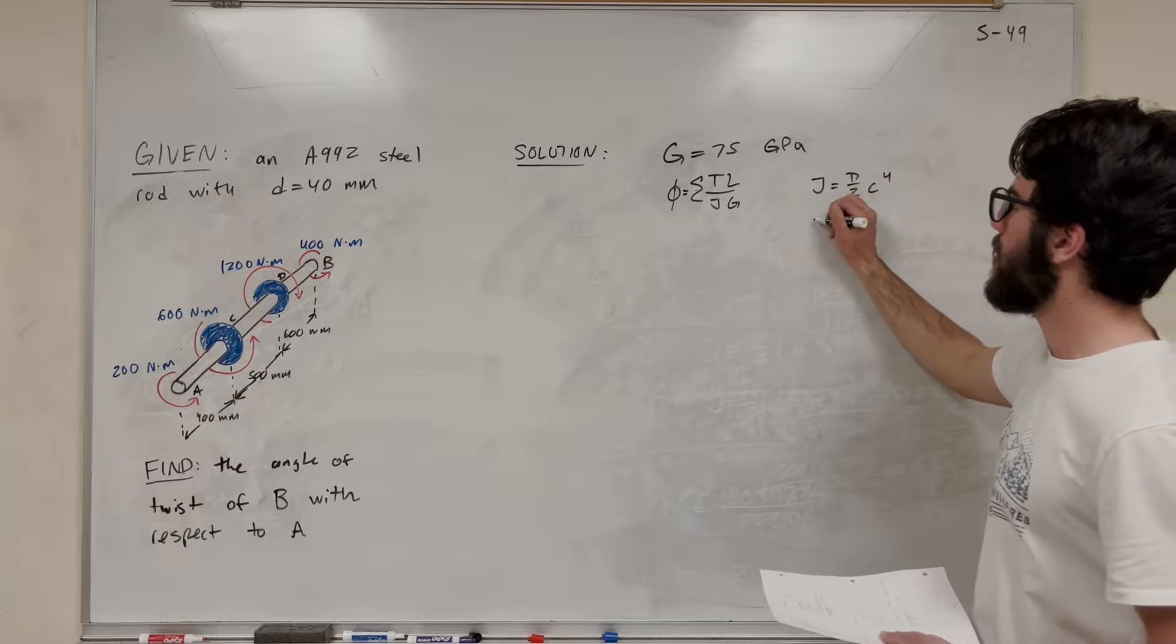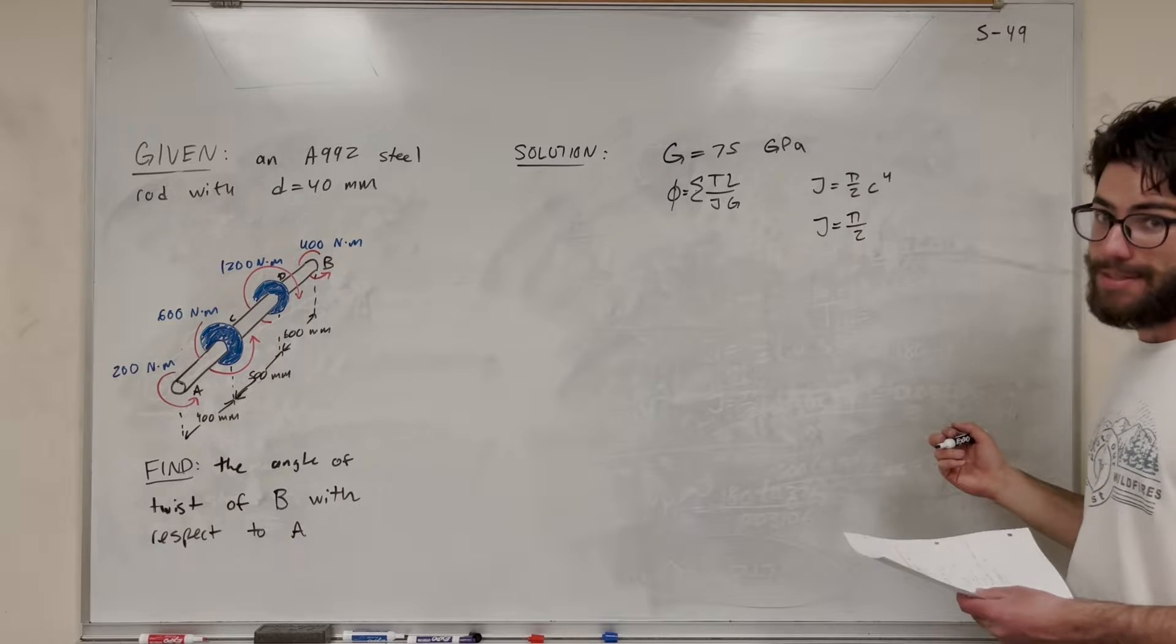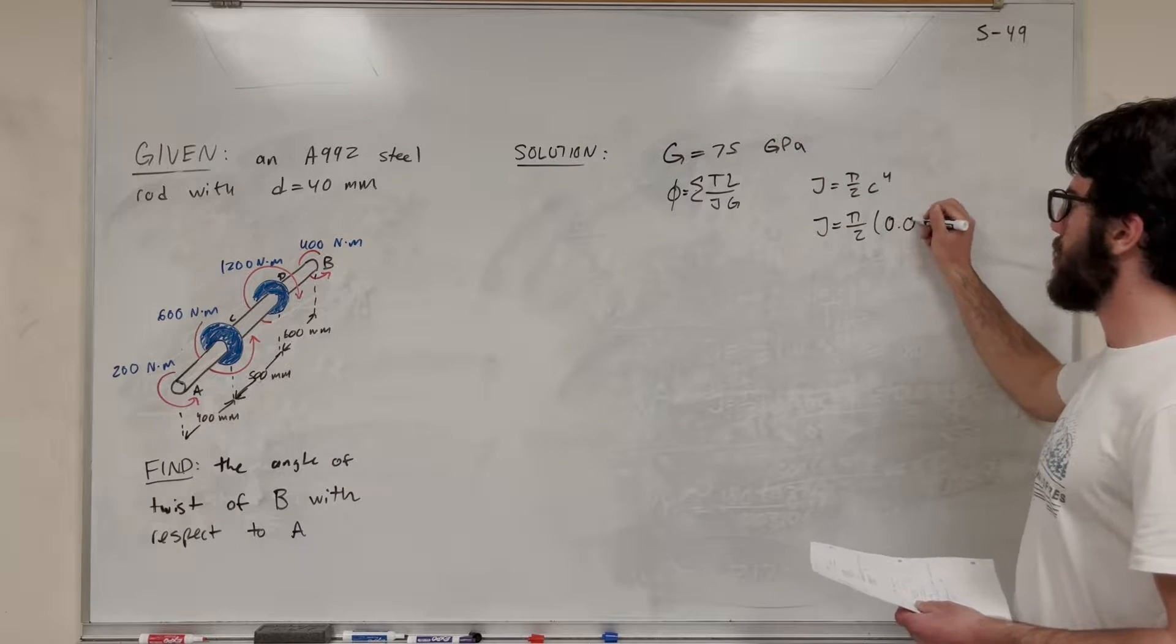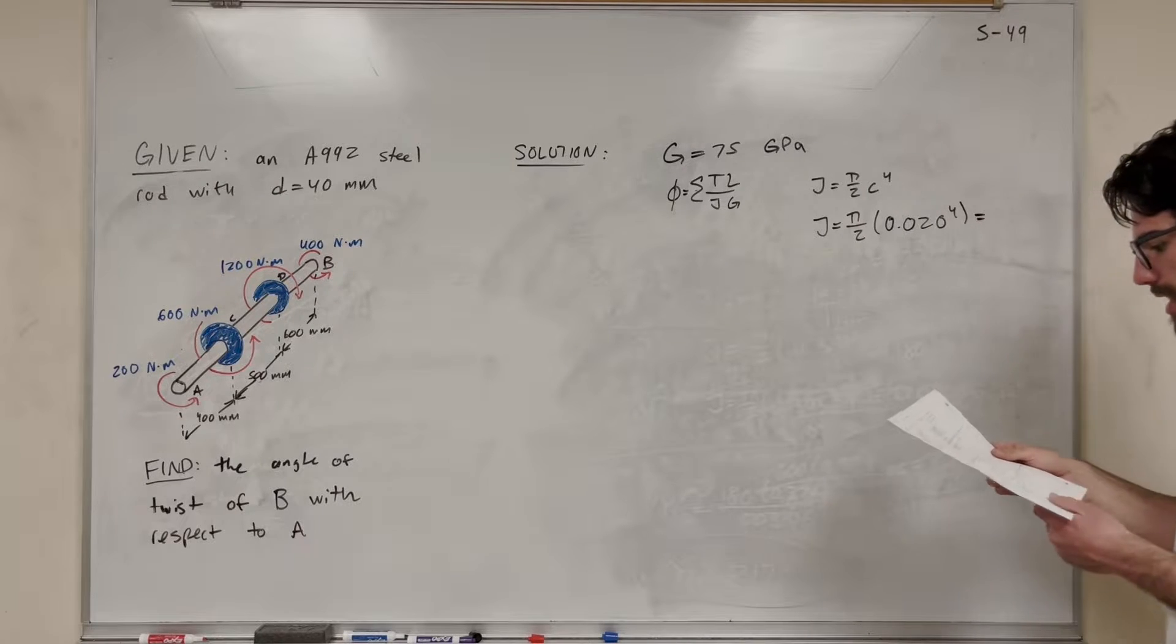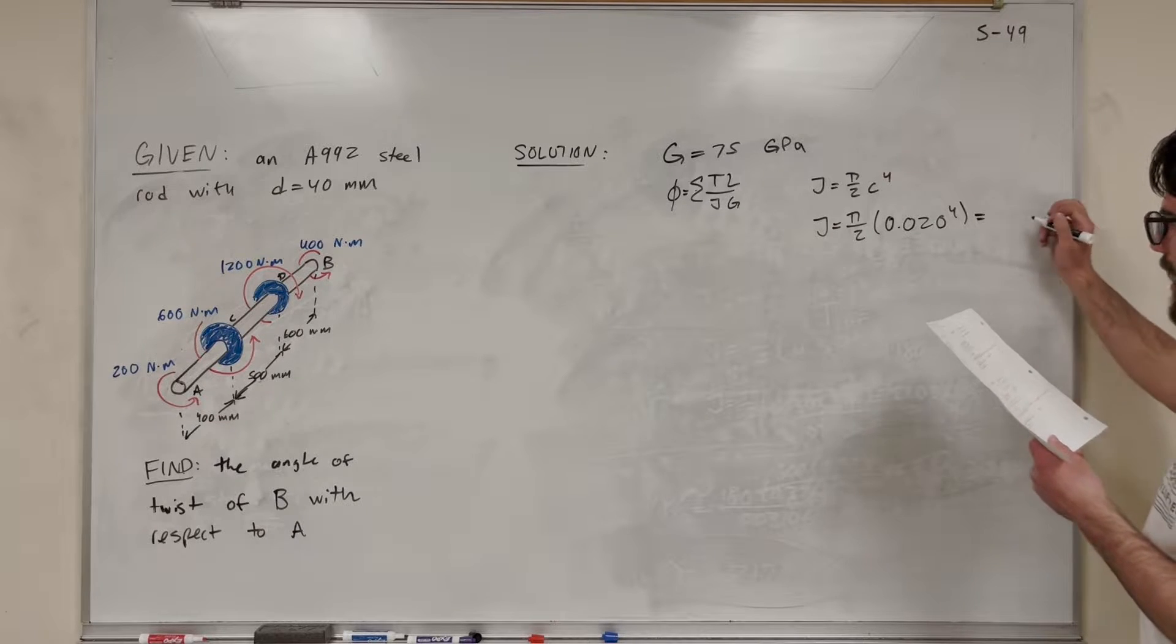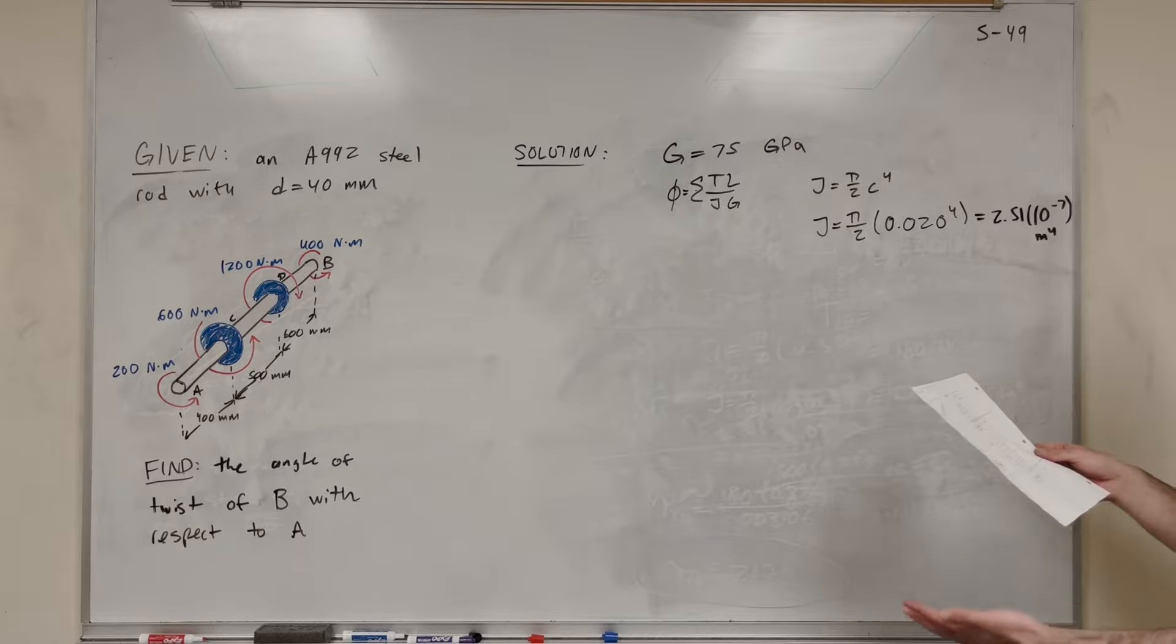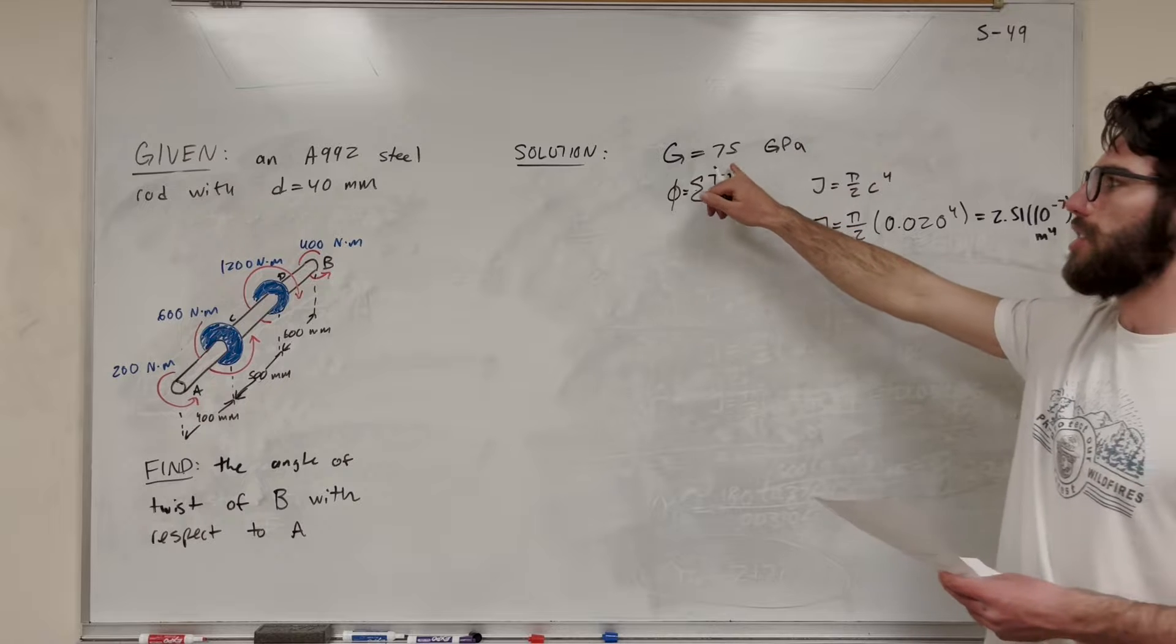So J itself, let's solve for J first of all. J is the polar moment of inertia. This is just relating to how thick your rod is, basically. So C, right, what is C? That's radius. We're given diameter is 40 millimeters, so our radius is going to be 0.020 to the fourth. Let's see, what did I put here? Why did I put a 2.5? Oh, that's a different question. Okay, don't look at that. 2.51 times 10 to the negative 7, and that's meters to the fourth. Okay, so we have that. Now we can go ahead. We have G. This is just A992 steel. That's the modulus of rigidity for that.